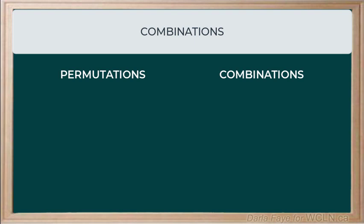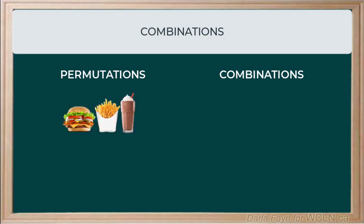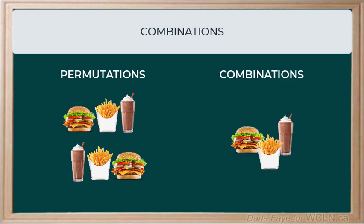Let's dig into that a little bit further. So, if I had a combination of a burger, fries, and a shake from McDonald's, that's one possible combination to make a meal. I could also reorder those to say I would like a shake, fries, and a burger. That's the same combination of items. However, it's a different permutation.